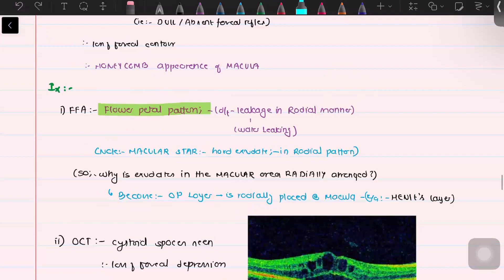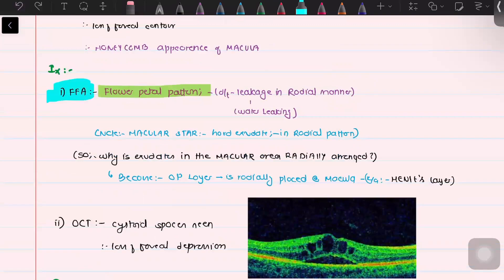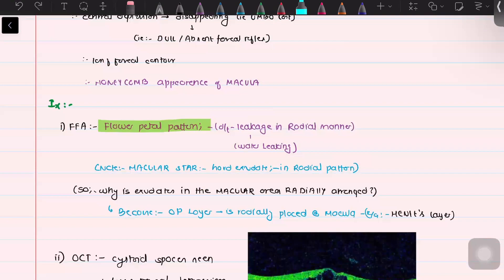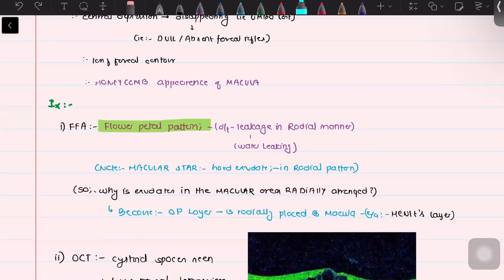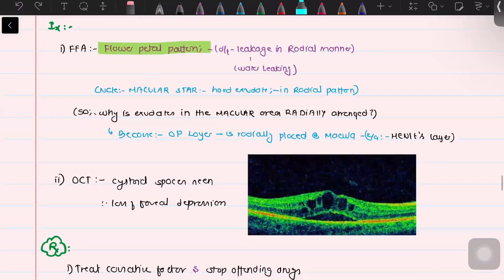The first investigation is fundus fluorescein angiography. There is leakage of fluid in a radial manner. Because of the Henle's fiber layer arrangement in the foveal area, leakage in the macular area always occurs in a radial, star-like pattern. This gives a characteristic flower petal pattern on fundus fluorescein angiography.